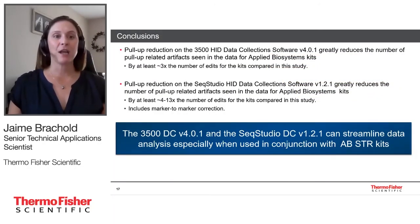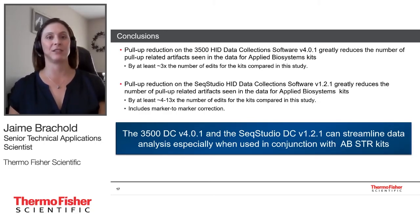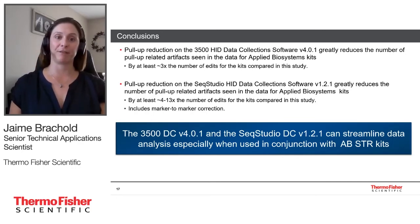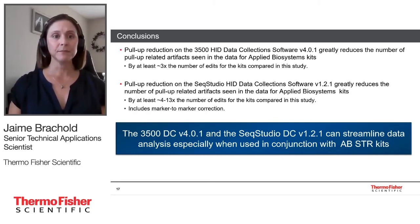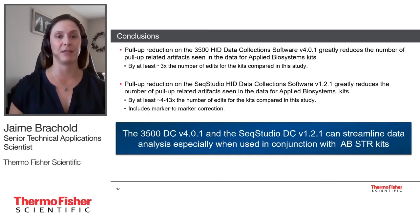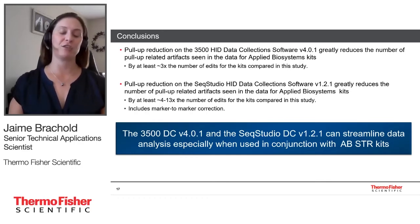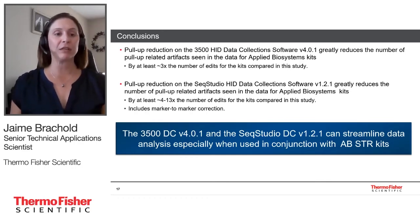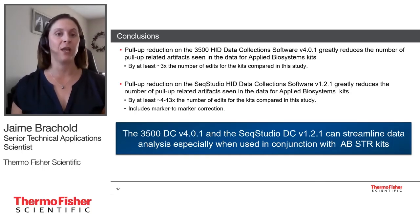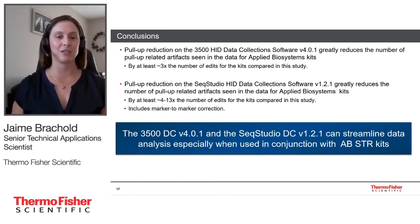In conclusion, pull-up reduction on both the 3500 and SEEK Studio with the latest data collection software versions greatly reduced pull-up-related artifacts for Applied Biosystems kits. On the 3500, it reduced pull-up artifacts by at least three times. On the SEEK Studio, depending on the kit, there was a four to thirteen times reduction in the number of edits. The SEEK Studio has the added benefit of marker-to-marker correction. Both the 3500 data collection v4.0.1 and SEEK Studio data collection v1.2.1 can streamline data analysis, especially when used with Applied Biosystems STR kits.